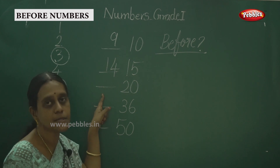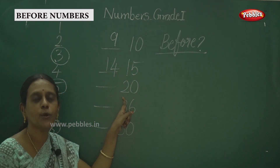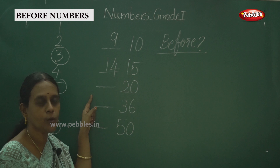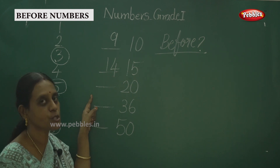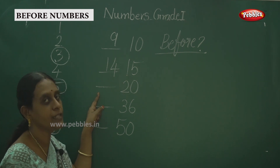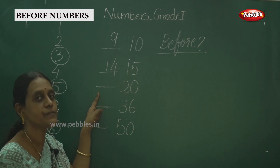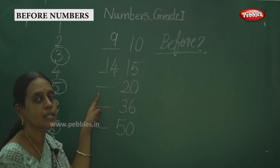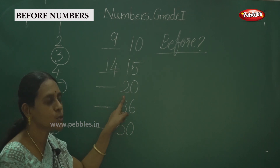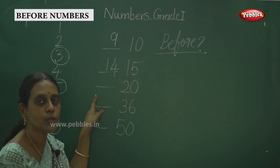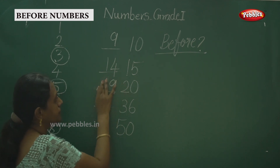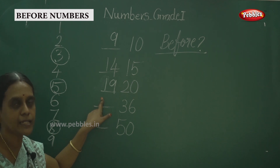Next sum. What is this? 20. Count from 11: 11, 12, 13, 14, 15, 16, 17, 18, 19, 20. So the number before 20 is 19.